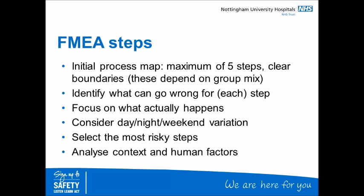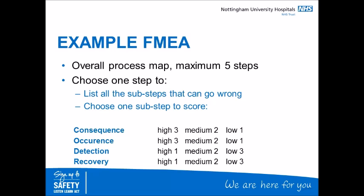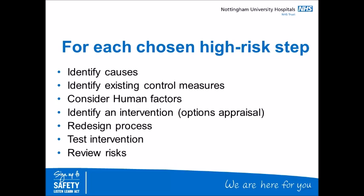Out of hours variation may also need to be considered. Failure modes — what can go wrong — are then identified for each chosen step. Alternatively, steps can be prioritised according to the time available and a different group is sometimes convened to address other steps at a later date. Each failure mode is then given a risk score. The scoring method considers the possibility of detection and recovery from the risk. The maximum risk score that can be generated is 81, which would include a high consequence scoring 3, a high risk of occurrence scoring 3, a low risk of detection scoring 3, and a low risk of recovery. For each high-risk step, the group will then identify causes, identify existing control measures, and consider human factors that influence the risk.